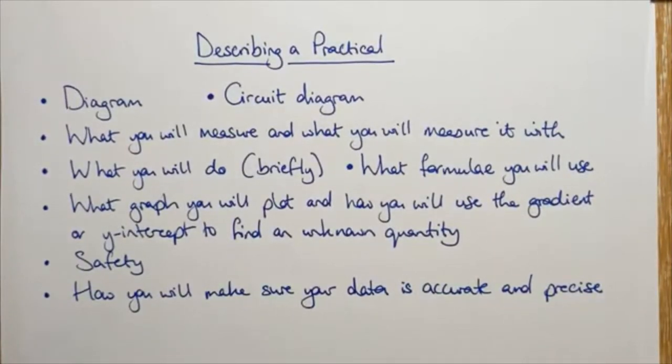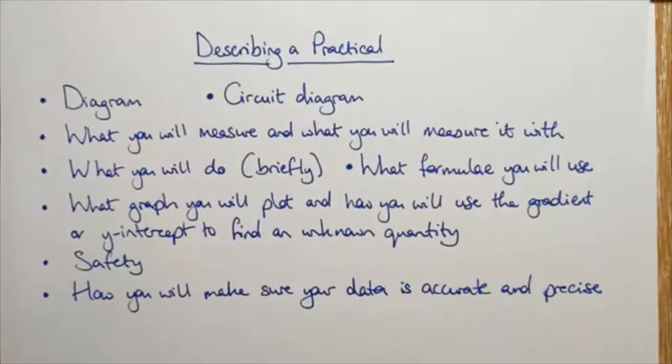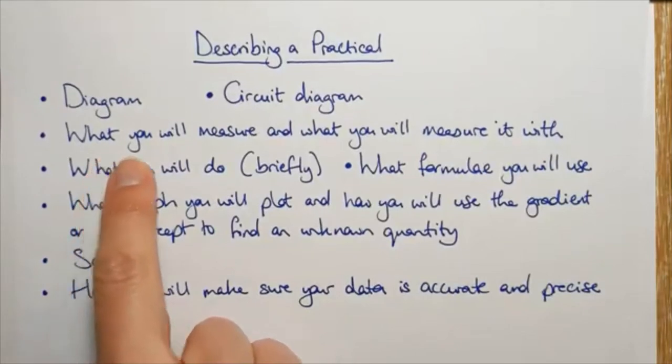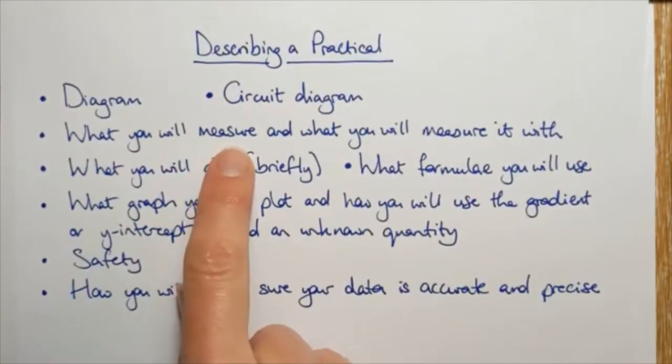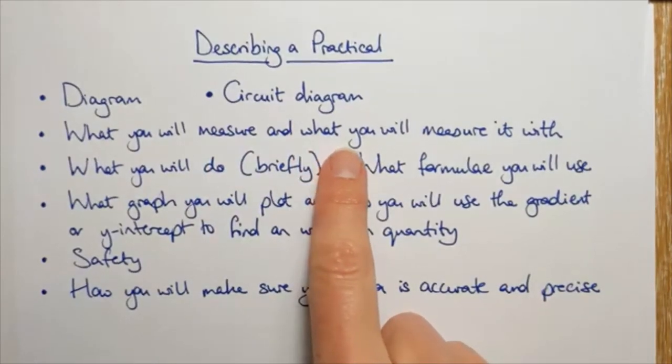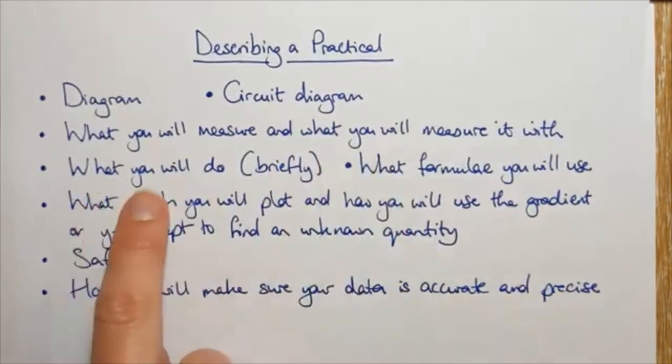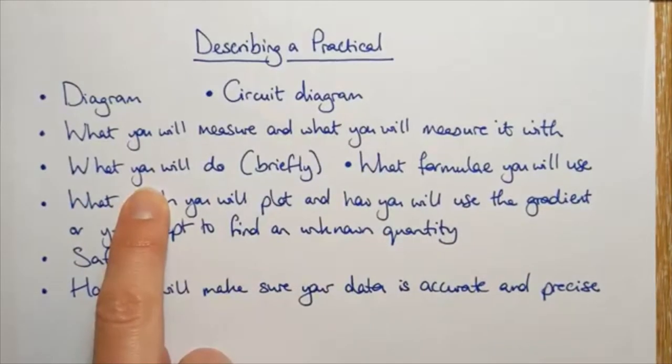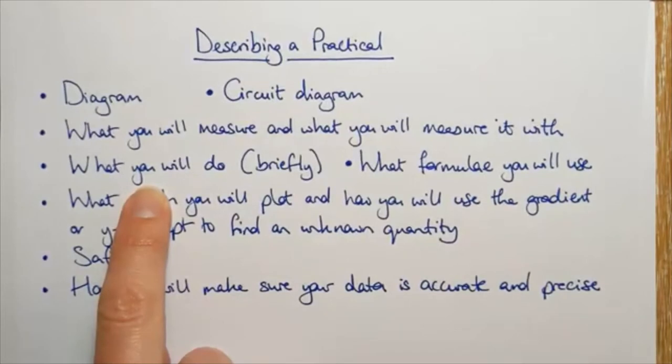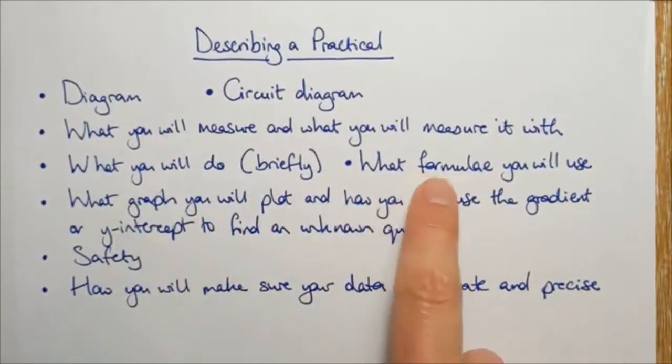So an example might be dropping something, dropping a tennis ball to calculate g, to calculate a value for g. Probably wouldn't need a diagram, no circuit diagram. I will measure the height of drop of a ball using a ruler and I will measure the time of drop using a stopwatch. I will drop the ball from a range of heights. I will repeat each height three times.